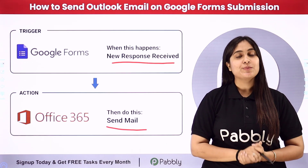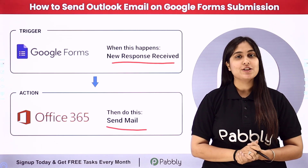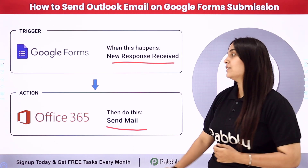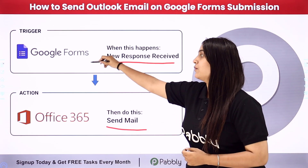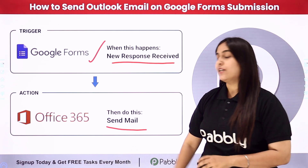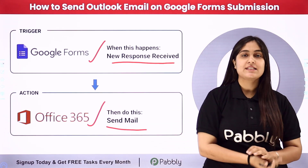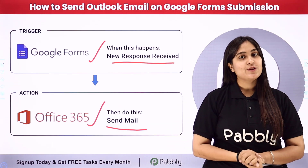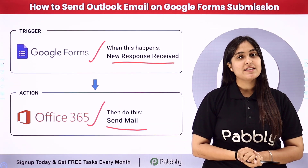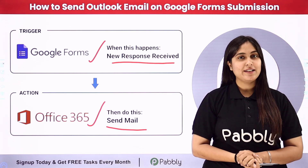Pabbly Connect works on two principles: trigger and action. Here the trigger application is Google Forms and the action application will be Microsoft Office 365. To learn this process step by step, let me take you to my screen.